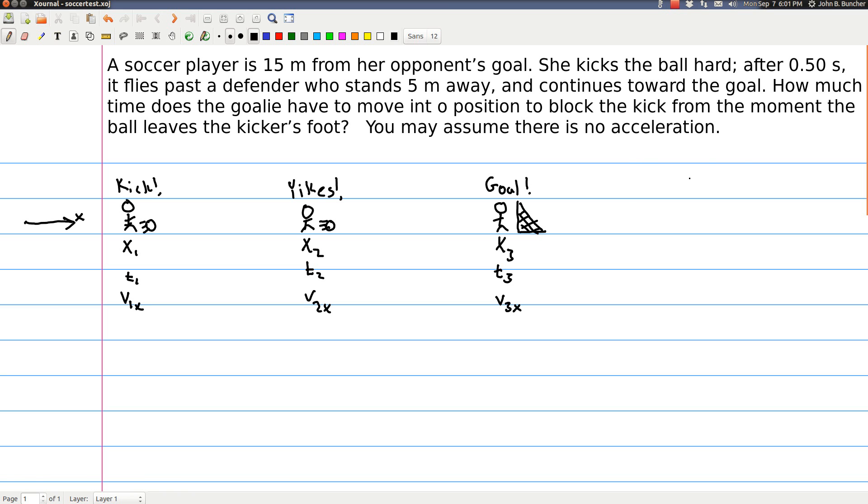Okay, so the next thing we have to do is write down everything we know. Known. Alright. x1 we're going to call that zero meters, right? Where the ball starts. We're always free to pick where the zero is for position and time. So we're just going to say x1 is zero meters right there. So we're going to do the same for t1. That's zero seconds.